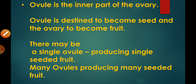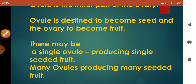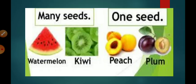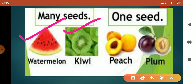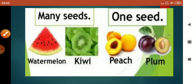The ovule is the inner part of the ovary. After fertilization, the ovule changes into a seed and the ovary changes into a fruit. There may be one ovule present in the ovary, meaning the fruit will have one seed, or there may be more ovules present, meaning the fruit will have many seeds. For example, watermelon and kiwi have many seeds, meaning there are many ovules in the ovary. For single-seeded fruits like peach, plum, and mango, there is only one ovule in each ovary.